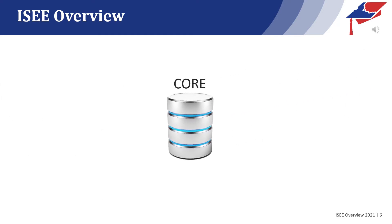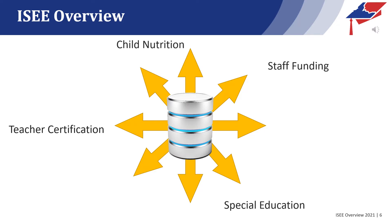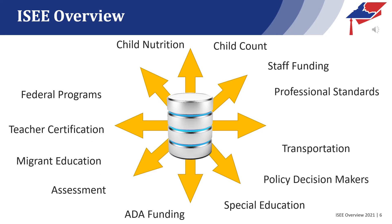When your data is loaded into the state core database, it is available for the many state programs that depend on this data. Teacher certification, staff funding, special education, child nutrition, and transportation are all examples of programs and funding that depend on this data. In addition, policy decision makers such as the legislature or other entities depend on accurate reporting to guide funding or program decisions to assist educators in providing the best opportunities for Idaho students. From this data, we also deliver aggregated responses to information requests from the media or research programs, as well as to federal reporting.